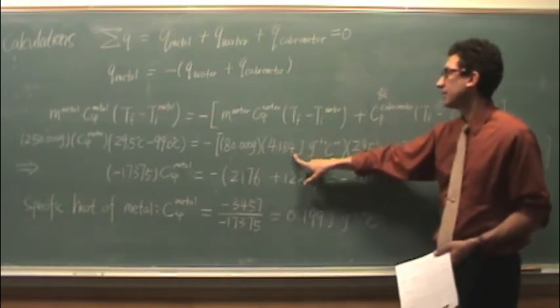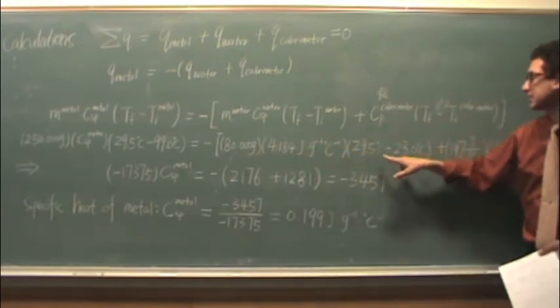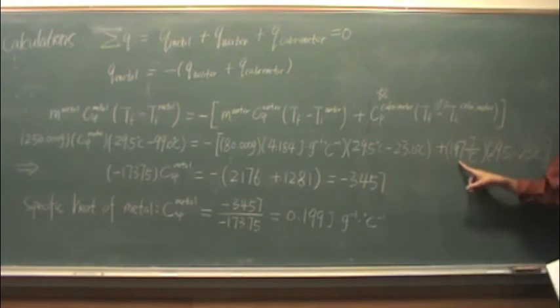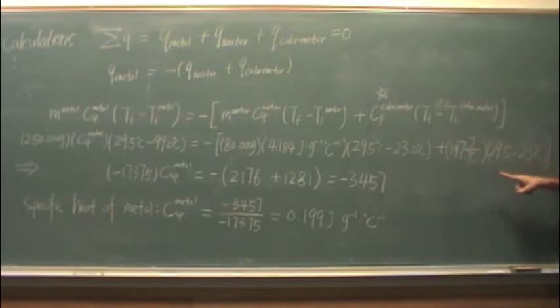And then the mass of the water, the CSP of the water, and here's the temperature difference. And again, remember CP, this is the average of the calorimeter, t final minus t initial.